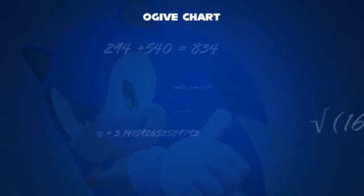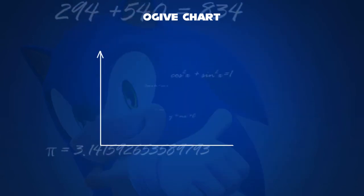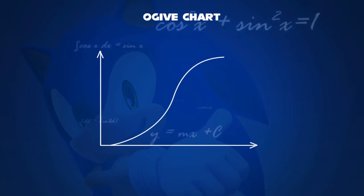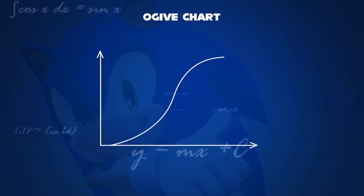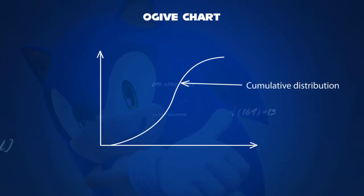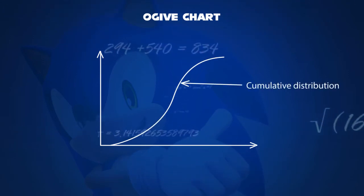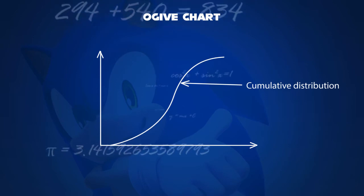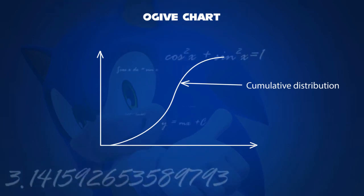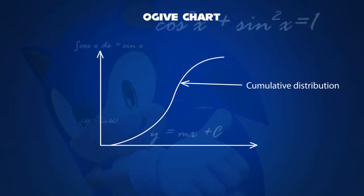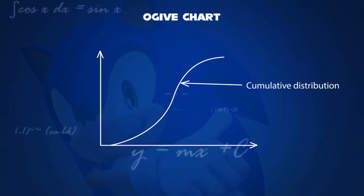In terms of mathematics, ogive is defined as the frequency distribution graph of a series. This goes in a cumulative way called the cumulative distribution, depending on its more or less.